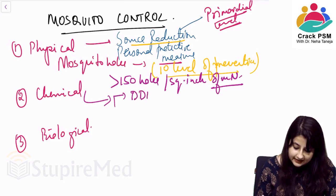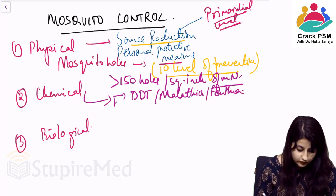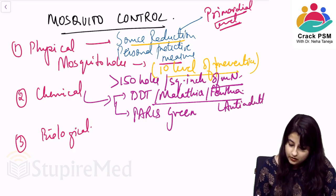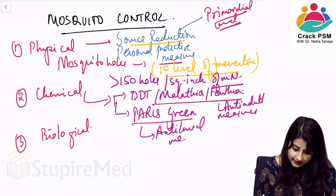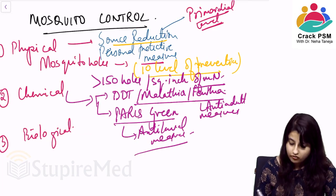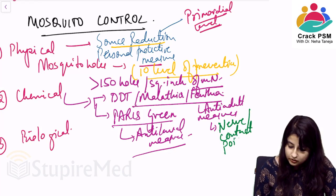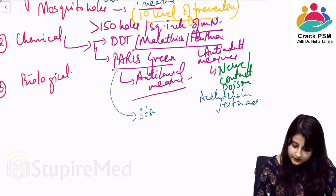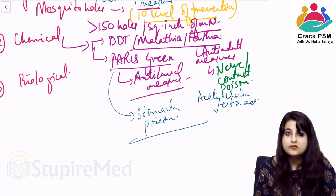For chemical measures, you use chemicals like DDT, malathion, and fenthion — these are all anti-adult measures that act on adult mosquitoes. Paris green is an anti-larval measure. DDT, malathion, and fenthion are nerve or contact poisons that act on the enzyme acetylcholinesterase. Paris green is a stomach poison. Remember: DDT, malathion, fenthion — anti-adult, contact/nerve poisons; Paris green — anti-larval, stomach poison.